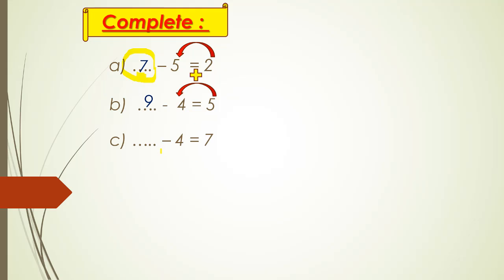Another exercise: before and minus, so I will make plus. Seven plus four — seven in my mind, four in my fingers — after seven: eight, nine, ten, eleven. So it will be eleven!